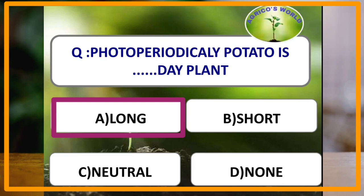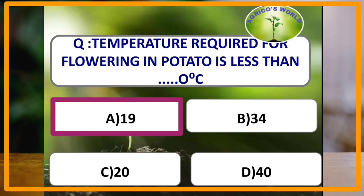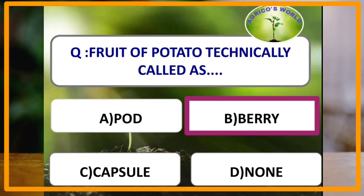Temperature required for flowering in potato is less than 19 degrees Celsius. The fruit of potato is technically called a berry. Generally, crops belonging to the family Solanaceae have fruits called berries.